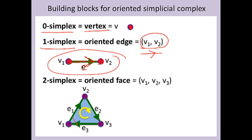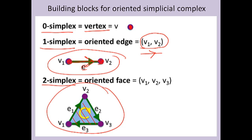A two-dimensional face is called a two-simplex. Again, we will use pictures or a symbol such as the letter f to denote a face, but one can also use an ordered triple such as v1, v2, v3, though multiple triples can denote the same oriented face.